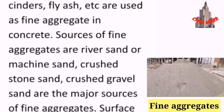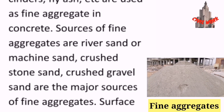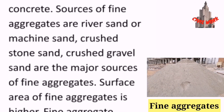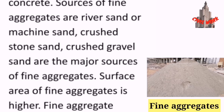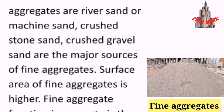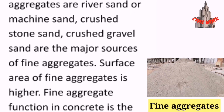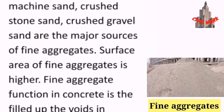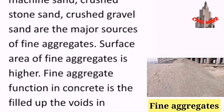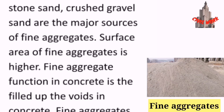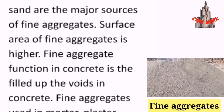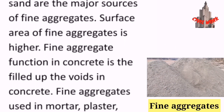Sources of fine aggregates are river sand or machine sand, crushed stone sand, and crushed gravel sand, which are the major sources of fine aggregates. The surface area of fine aggregates is higher.